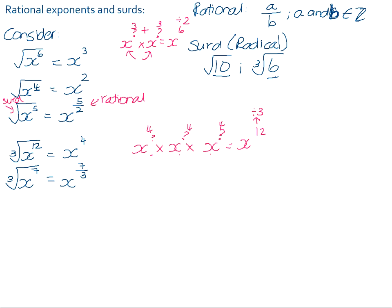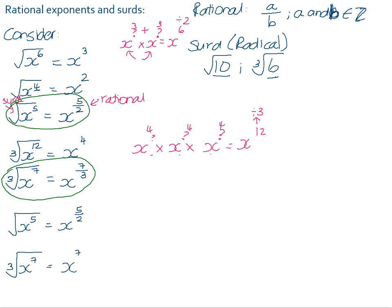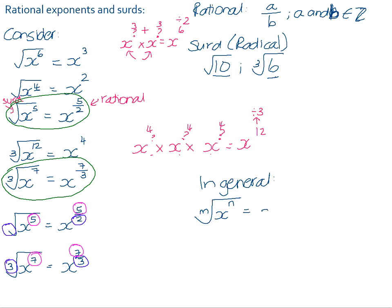If we look at what happens between the surd form and the rational exponent form, we can see that the type of root gives us the denominator of the fraction in each case. The square root of x to the power of 5 became x to the power of 5 over 2, and the cube root of x to the power of 7 became x to the power of 7 over 3. In each case, the type of root — remember when there's nothing filled in, we know that it's a square root — gives us the denominator in the fraction, and the exponent of the rational exponent is the exponent that the base was being raised to underneath the surd sign. So we can generalize this relationship. In general, if you have the nth root of x to the power of m, you can rewrite that in rational exponent form as x to the power of m over n. The denominator is the root type you're dealing with, and the numerator is whatever the exponent on the base was.